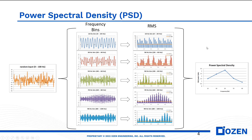These frequency bins collect the random vibrations at those frequencies. We take the root mean square to obtain the average value and create a power spectral density at each of those locations. Because of the indeterministic value of random vibration, this becomes a very statistical analysis. It also becomes a lot quicker than taking raw acceleration data and putting it into a transient analysis to see how a system would respond.